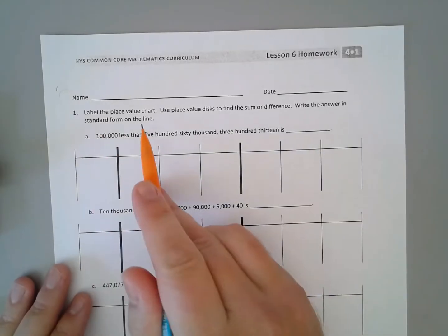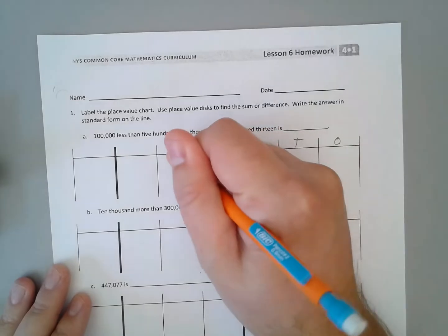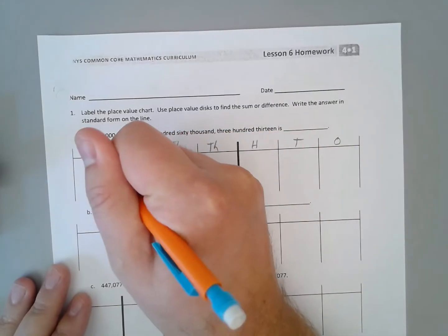So label your place value chart. So we have ones, tens, hundreds, thousands, ten thousands, hundred thousands, and millions.